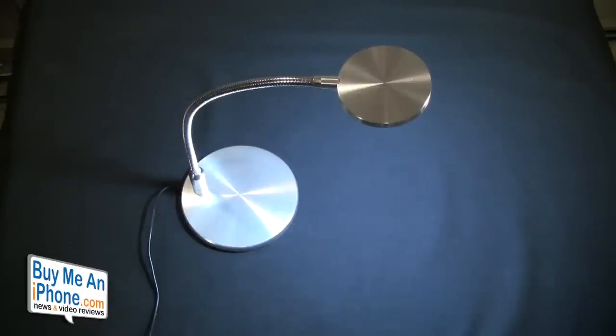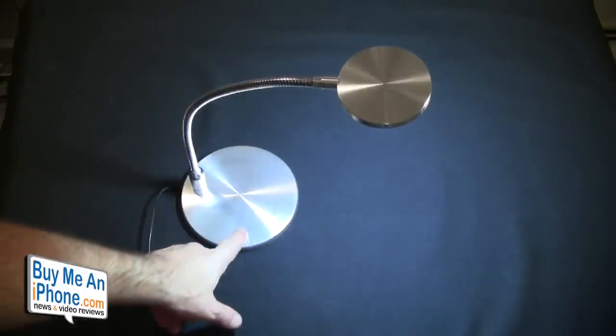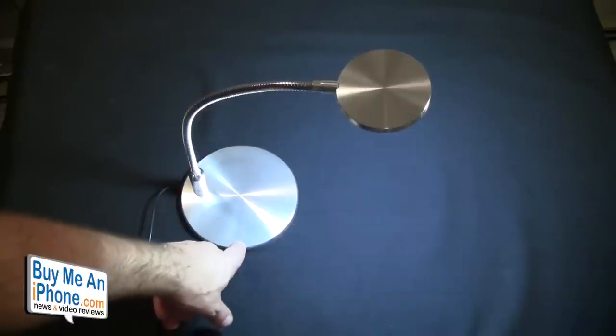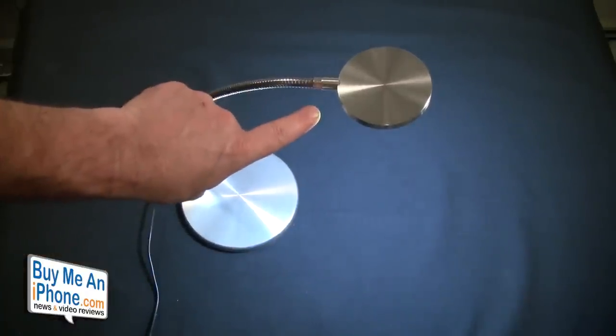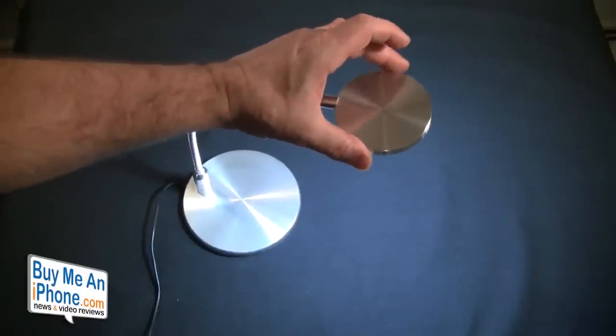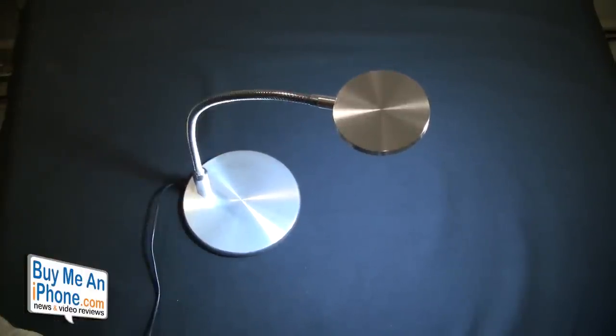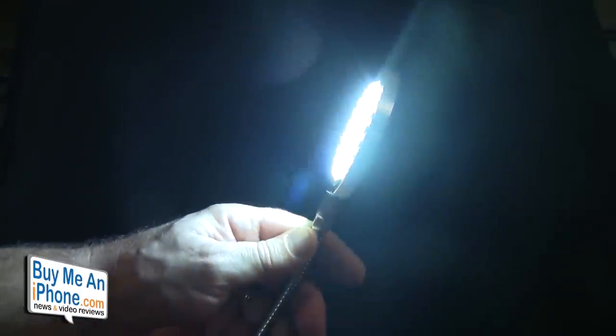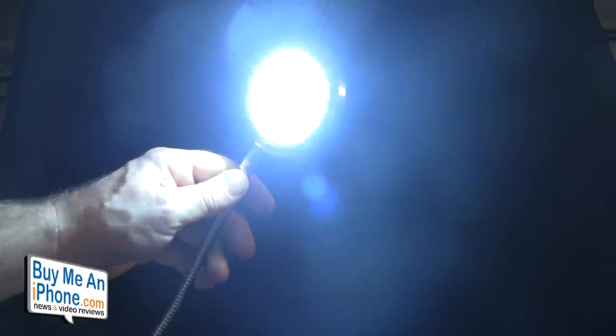To give you guys some dimensions on this lamp, the base here, all aluminum base, is 5.625 inches across. The arm, as we mentioned, is 12 inches. And the light itself, this hockey puck light, is 3.125 inches across. There are the LED lights. Very bright, yet very cool to the eye. It looks really nice.